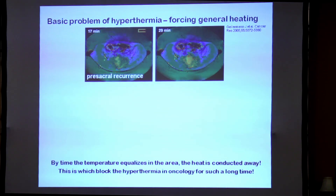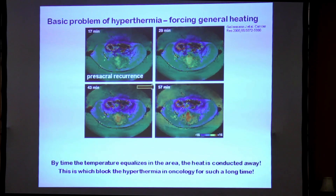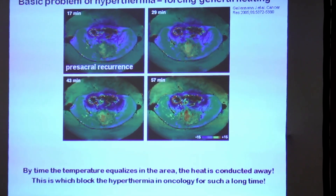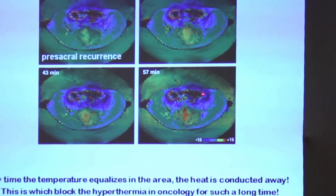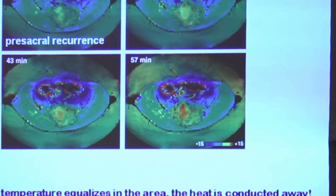This has been a problem for hundreds or thousands of years — sometimes giving very good results when temperature could be concentrated in the correct place, but achieving the opposite effect when it spread to other parts of the body. This can also be seen in this MRI picture. You can see the tumor being heated up, and over time the surrounding tissue is also heated up. Additionally, if you are using the wrong process — for example, microwave — you can have hot spots in other areas.